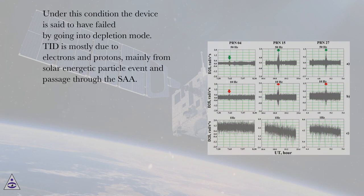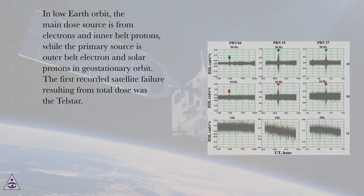TID is mostly due to electrons and protons, mainly from solar energetic particle events and passage through the SAA. In low-Earth orbit, the main dose source is from electrons and inner-belt protons, while the primary source is outer-belt electrons and solar protons in geostationary orbit.